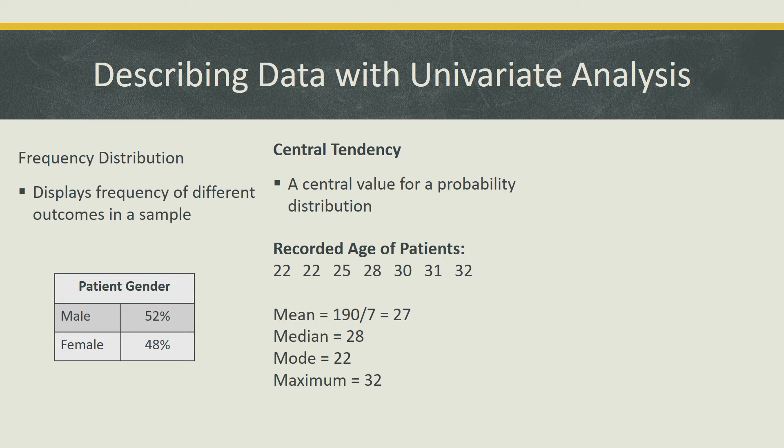We can also determine the maximum and minimum values in the dataset, which is the highest and lowest age, respectively. The maximum age is 32. The minimum age is 22. All of these descriptive measures help summarize the data and provide a big picture of the sample.